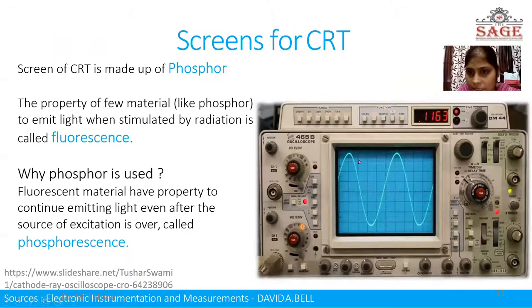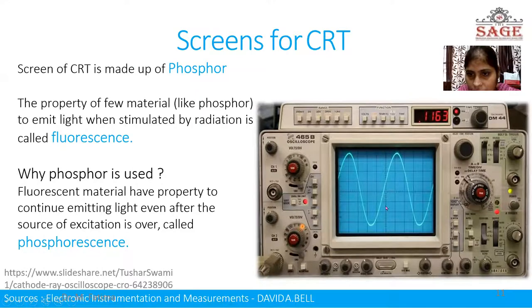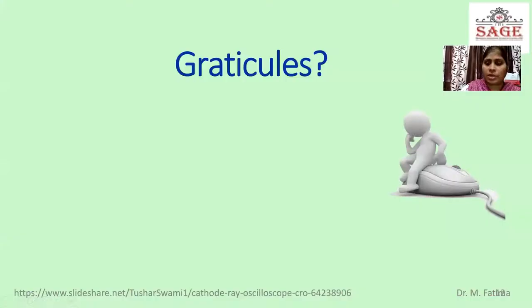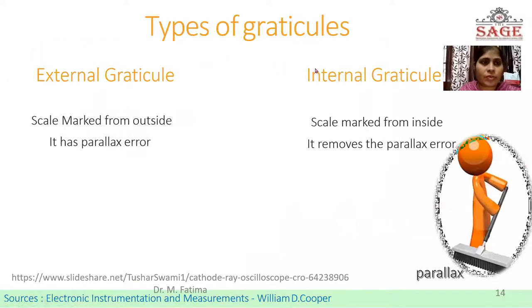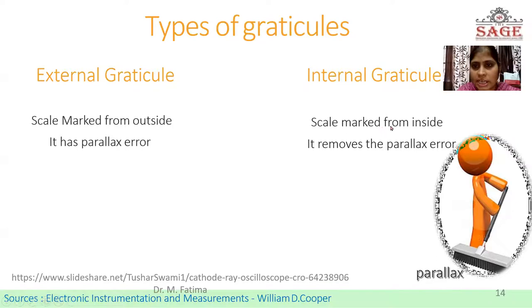You can see here the screen is divided into parts or divisions. This one division equals one centimeter, and the subdivisions are also present. These are the Graticules, used to do measurements easily. Types of Graticules: external Graticule and internal Graticule. The scale marked from outside is called external Graticule, and it removes parallax error. The scale marked from inside of the screen is called internal Graticule, which also removes parallax error.